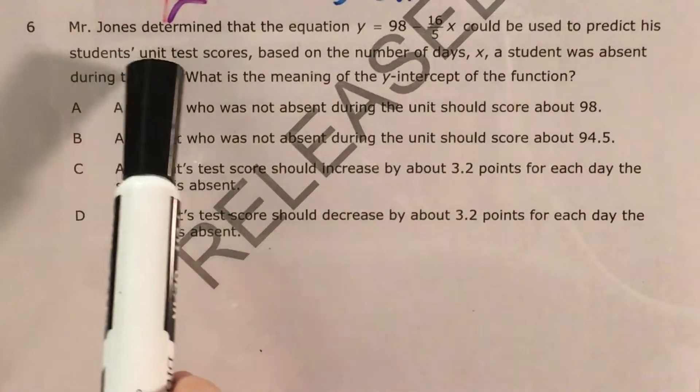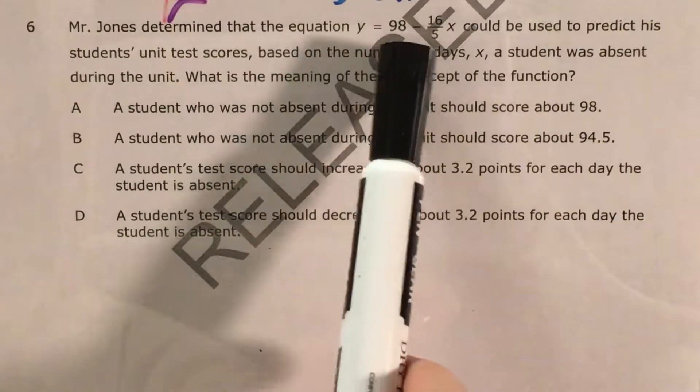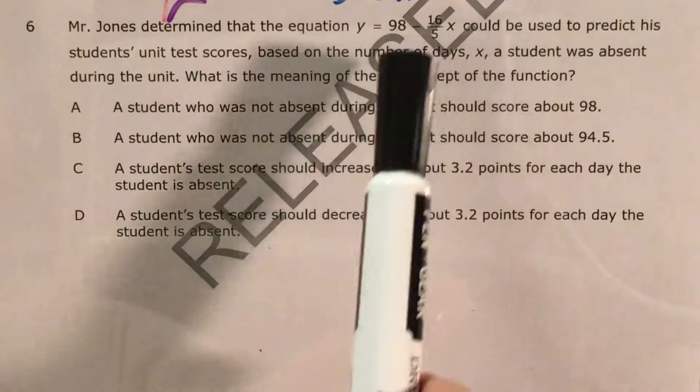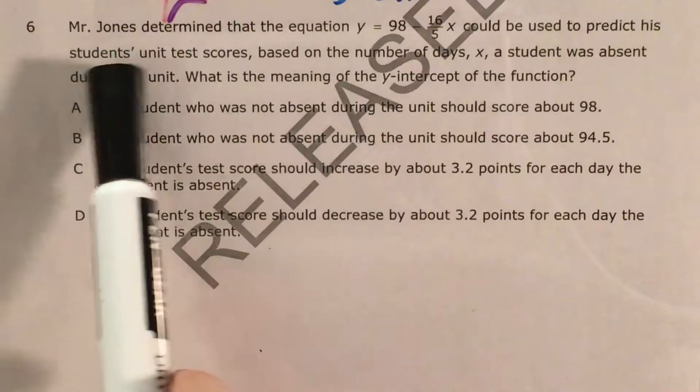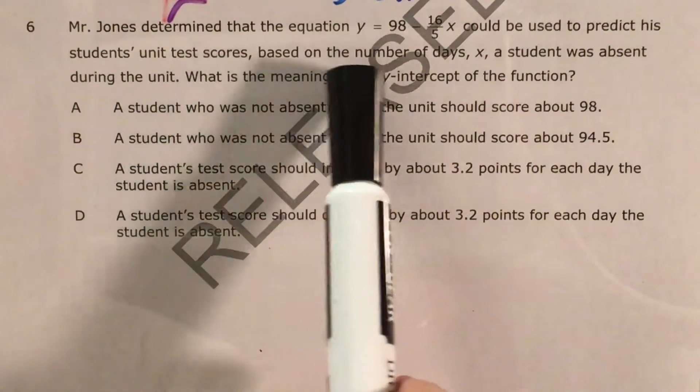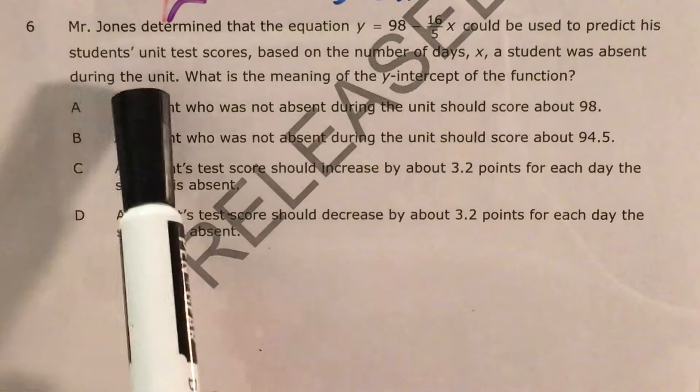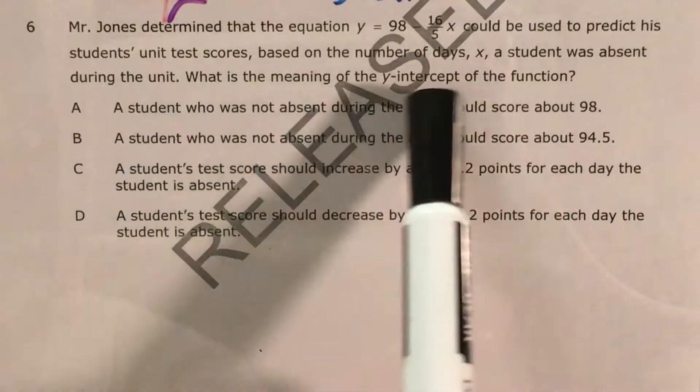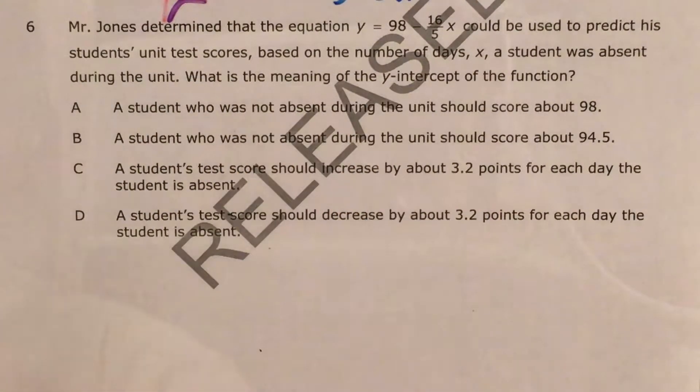We see that Mr. Jones determined that the equation y equals 98 minus 16 fifths x could be used to predict a student's unit test scores based on the number of days x a student was absent during the unit. And we're trying to figure out what the meaning of the y-intercept of this function is.